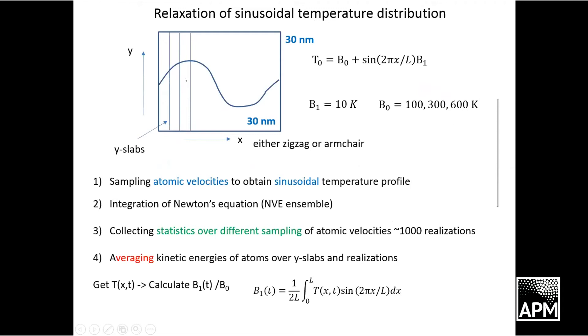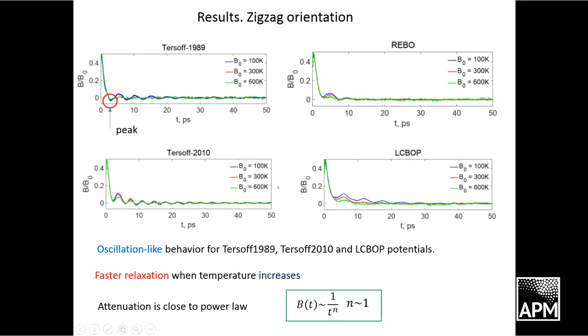The next problem is the relaxation of sinusoidal temperature distribution. We used a smaller cell size, around 13 nanometers in each direction. We created a sinusoidal temperature distribution by this formula with different background temperatures. We did almost the same kind of simulation: integrate Newton's equations, then average the results over 1000 realizations. During these realizations, we average kinetic energies of atoms in Y slabs, construct the temperature profile, and then find this B dependence on time.